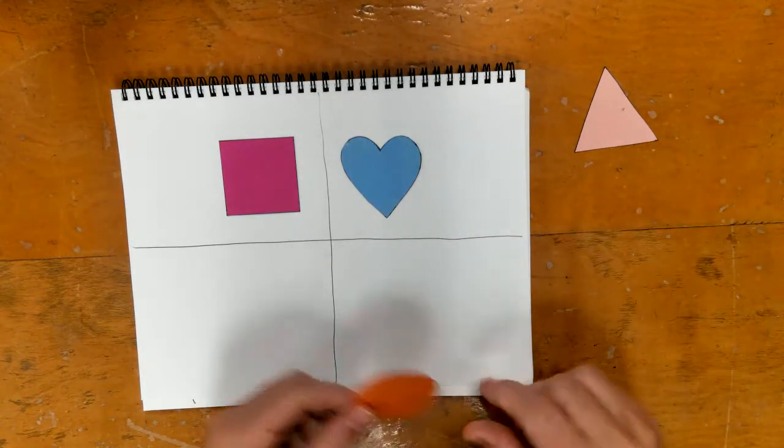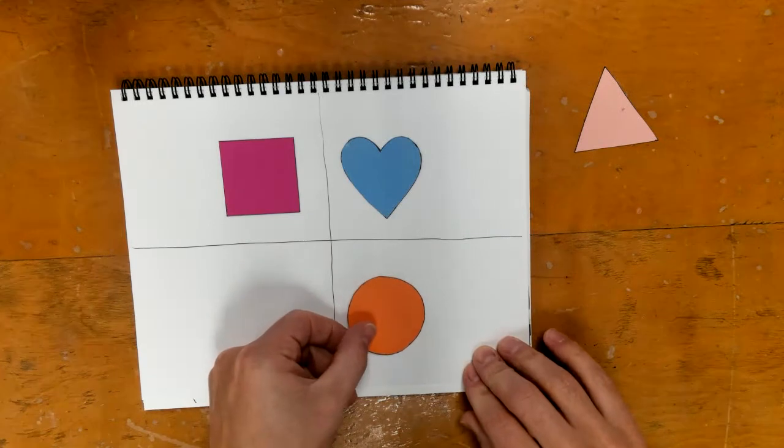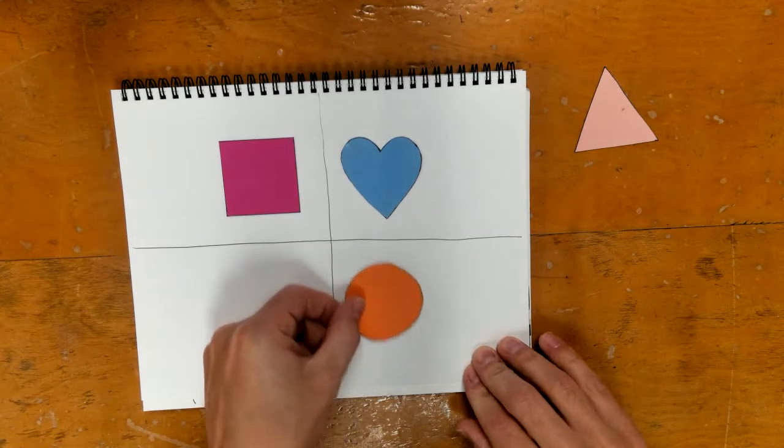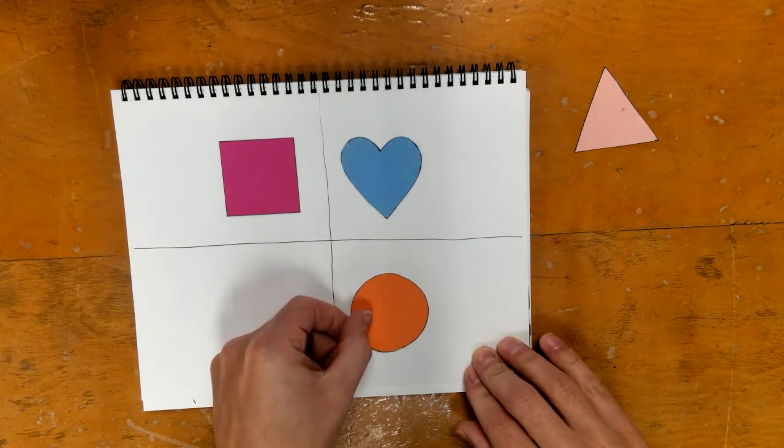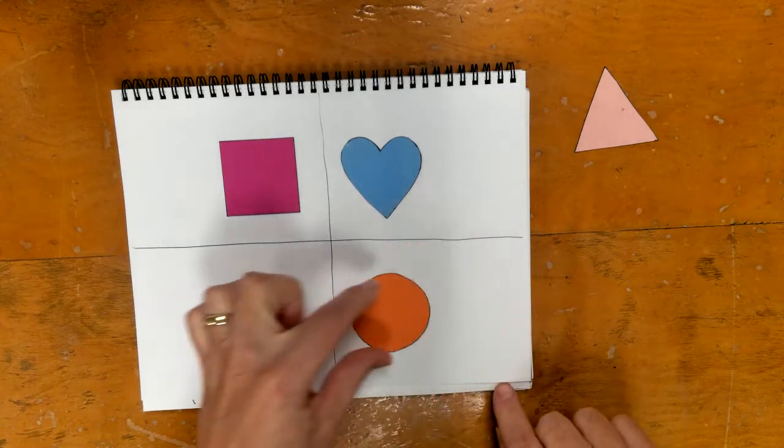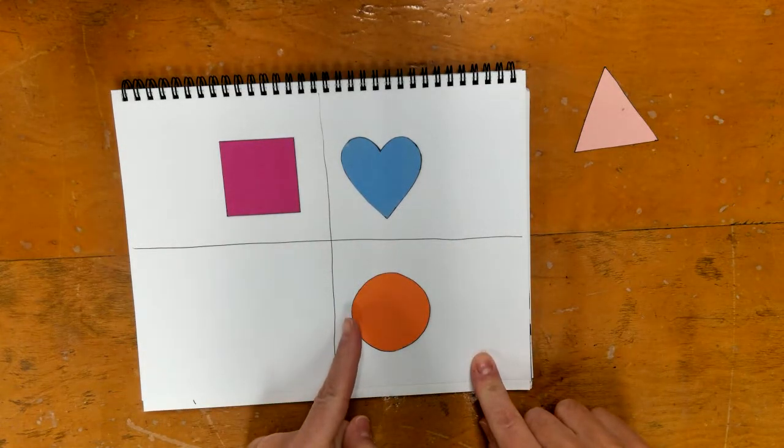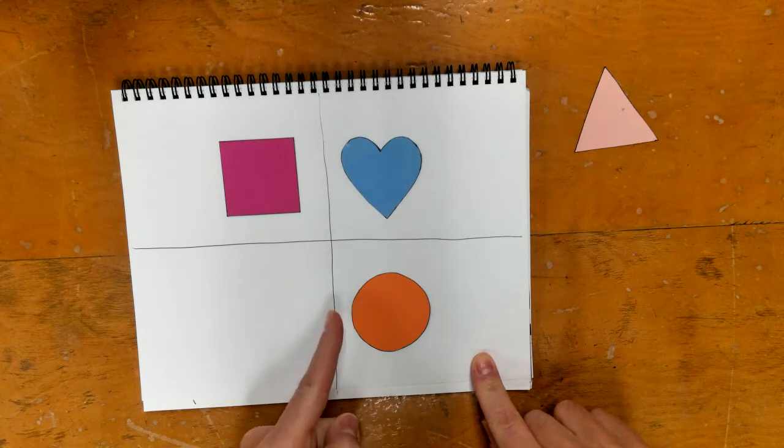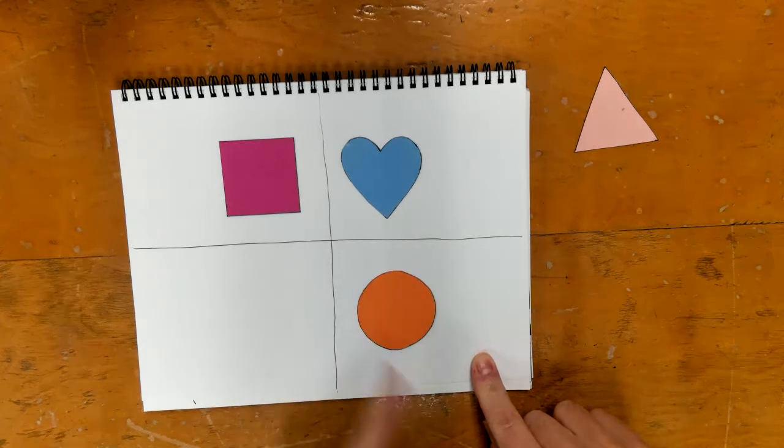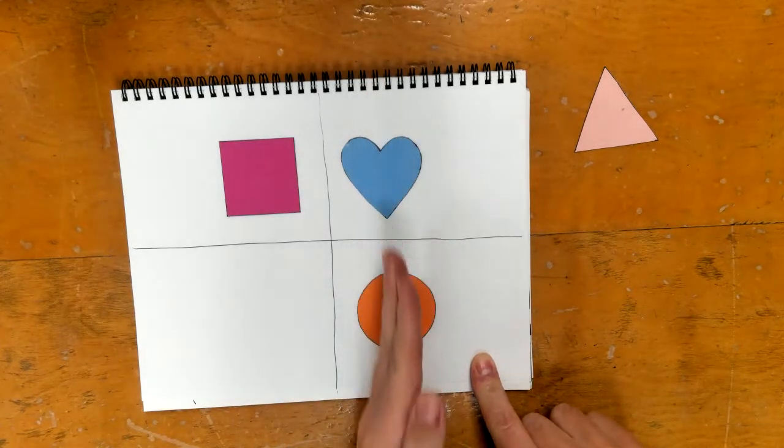Then I'm going to take my circle and I'm going to place it at the bottom here. It's not all the way down at the bottom. It's not all the way up at the top. Again in the middle going this way. And then it's closer to the line over here. Still a little bit of space, kind of even with that heart.